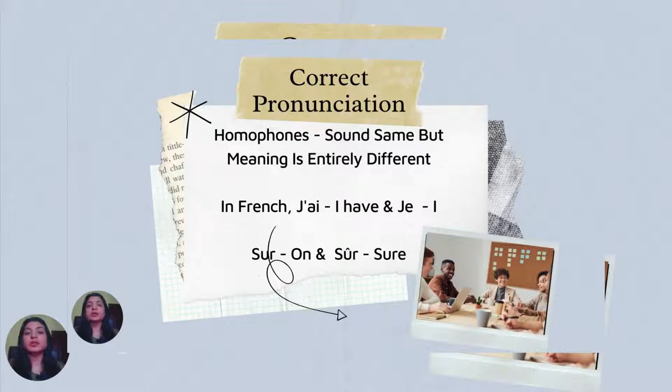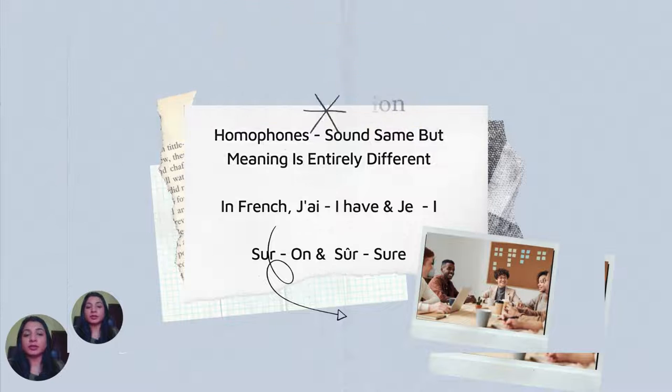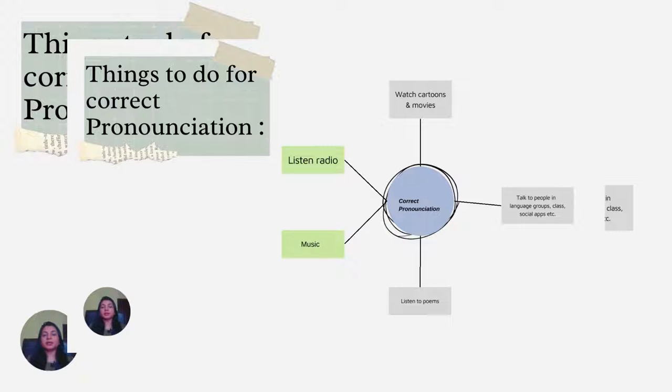You should have correct pronunciation. You may find homophones and many other words which have very slight differences in their pronunciation. For example, in French, 'j'ai' means I have, and 'geo' means I. 'Son' is on, and 'sur' is sure. So make sure that you are using correct pronunciation.